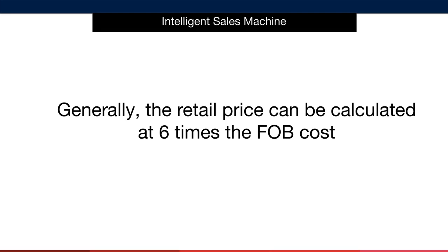Let me give you another example. Let's say your FOB cost is $2. You would multiply that by six, which is $12. You then round it up to a retail price of $12.99.